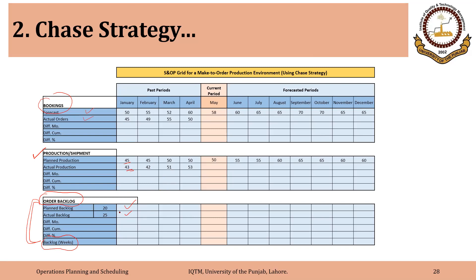For example, if you have a certain backlog at the end of January, we calculate how much that backlog equals in terms of number of weeks for the next month — February in this case. So we can convert this backlog quantity into a time expressed as number of weeks. We will see these calculations with the help of Excel.